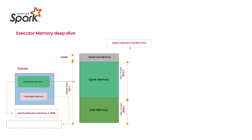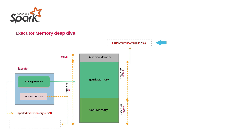This is how Spark internally allocates memory. The ratio is controlled by spark.memory.fraction, which defaults to 0.6 — meaning 60% goes to Spark Memory and 40% to User Memory. If you set it to 0.7, it becomes 70/30 automatically. This is configurable.